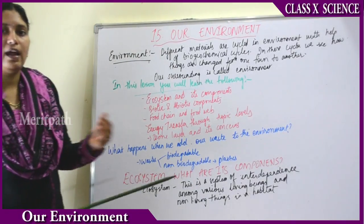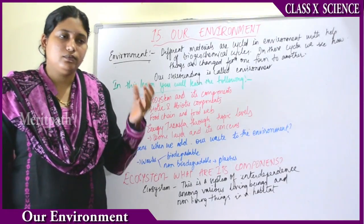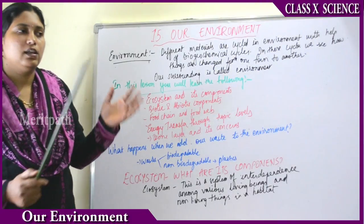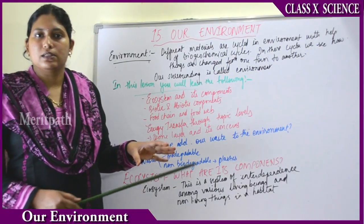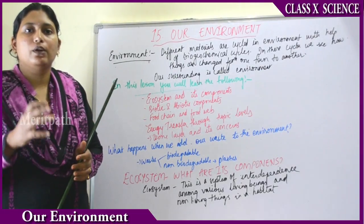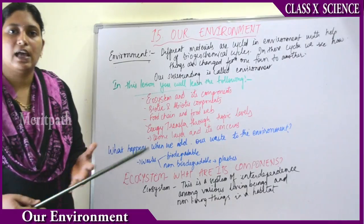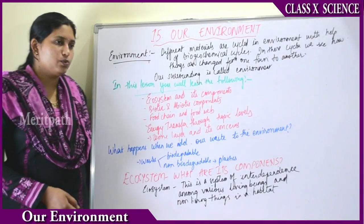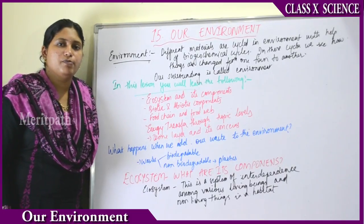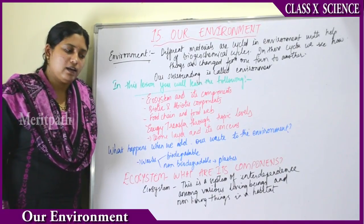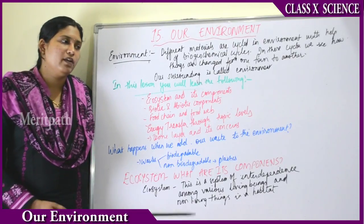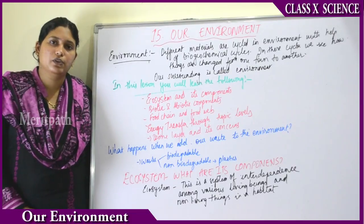What happens when we add waste to the environment? Every day we generate a lot of waste from our houses. It piles up in garbage bins, then is taken to dumping yards and put in landfills. Some things get degraded in the environment with the help of microorganisms — like vegetable waste and fruit waste — which over a period of time get mixed up with the soil.